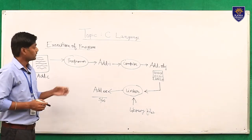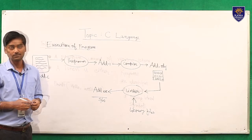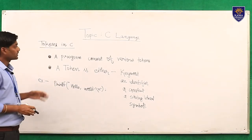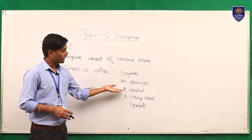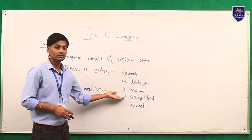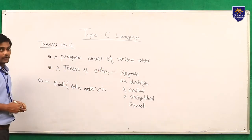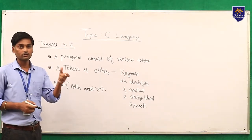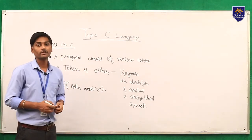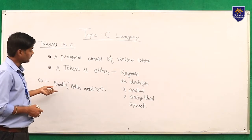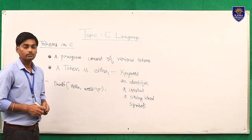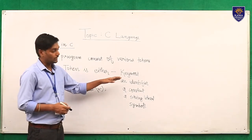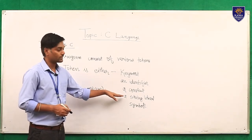When we develop software, we go through this entire process. Now let's look at terminology used in C language. The first is 'token.' A token may be a keyword, an identifier, a constant value, a string literal, or a symbol. A C program consists of various tokens — these are the basic building blocks needed to write any program.